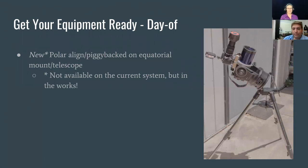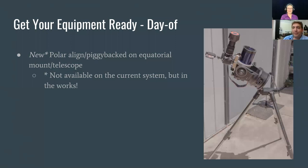Tom asks to confirm: with a GEM (German equatorial mount), celestial north equals up, and that's acceptable — correct? Yes, that's a German equatorial mount. That'll work too.